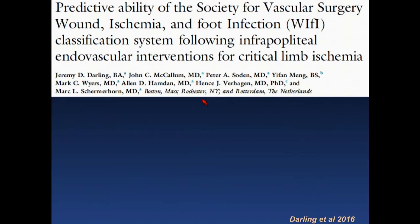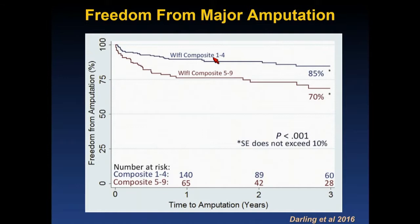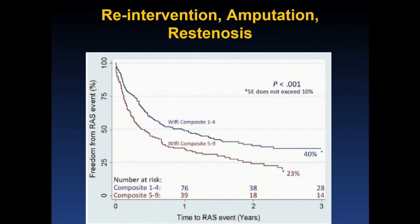This was also examined specifically in infrapopliteal interventions for critical limb ischemia using one of the largest single-center databases available, including 596 limbs — 77% diabetic, 23% with chronic kidney disease. Rather than four categories, they used the absolute composite WIfI score and found that a lower score was associated with freedom from amputation of 85% out to three years versus 70%, with similar associations for reintervention, amputation, and restenosis.